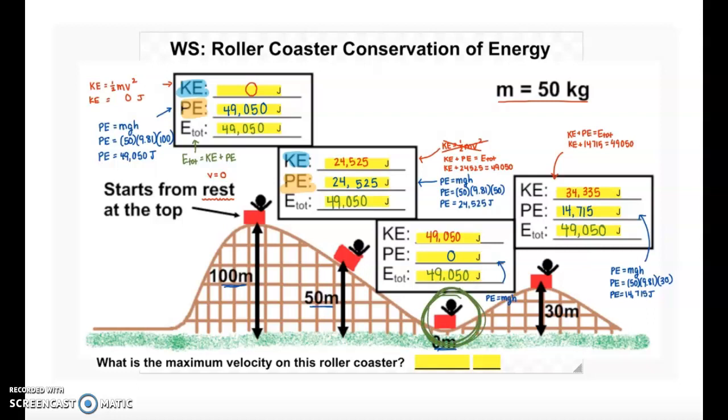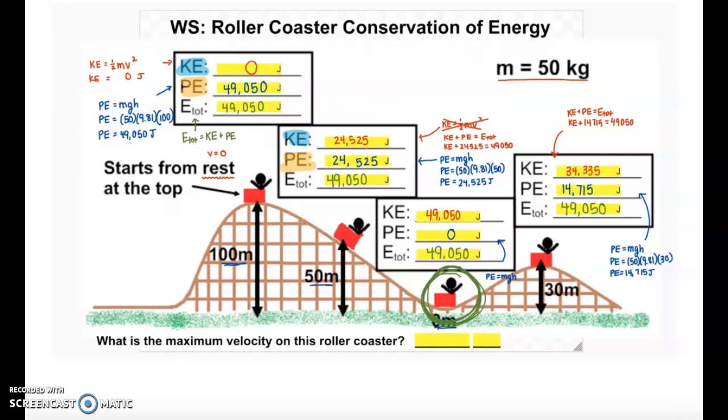If I could use that kinetic energy to solve for the velocity, I can find out the maximum velocity of the roller coaster. I'm going to take the maximum kinetic energy and set it equal to one-half mv squared, where that v is going to be my maximum velocity. My maximum kinetic energy is 49,050. I know mass is still 50, and I'm looking for my velocity.